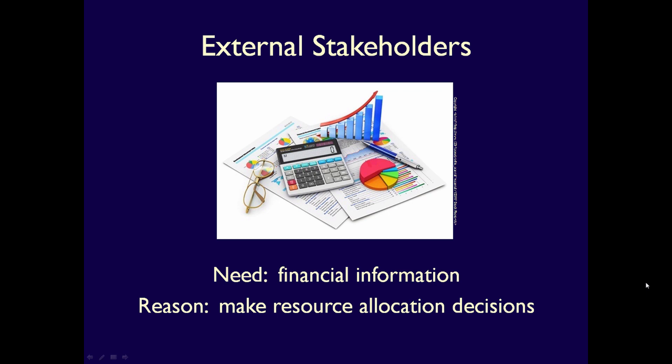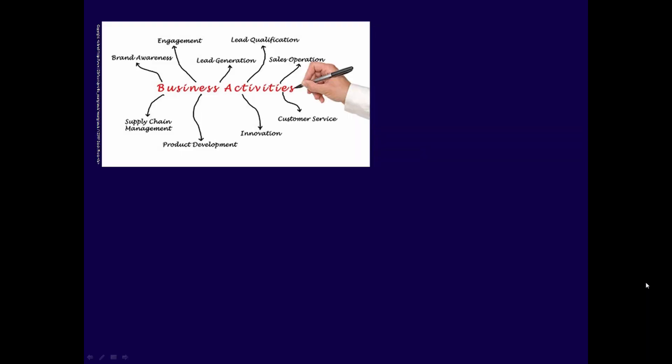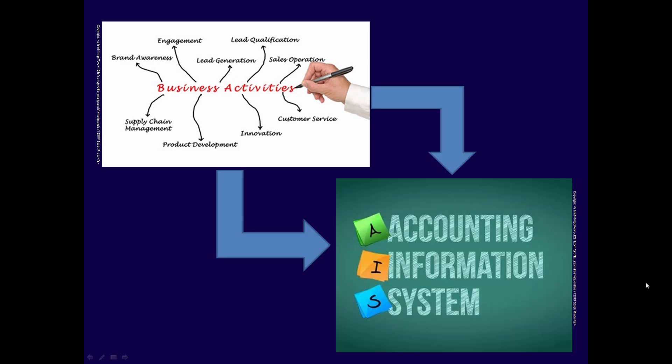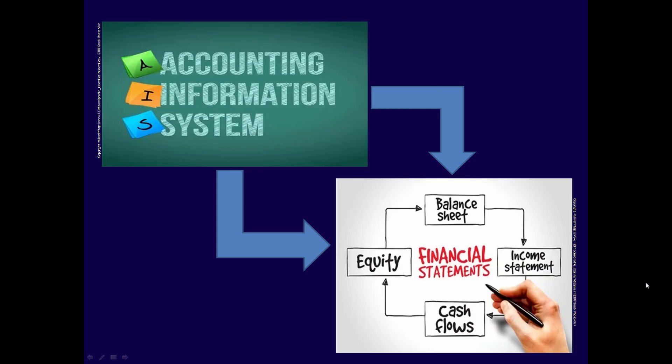External stakeholders need a business's financial information so they can make decisions with regards to providing resources — generally money — to the business. Businesses are involved in thousands of activities every single day. They record their business activities in the accounting system, an information system that collects, groups, and communicates a business's financial position, including its financial health and profitability. The end result of an accounting system are the financial statements, which tell a business's story: what they do and how well they do it. They provide a business's financial performance, its current financial position, and its cash flows.